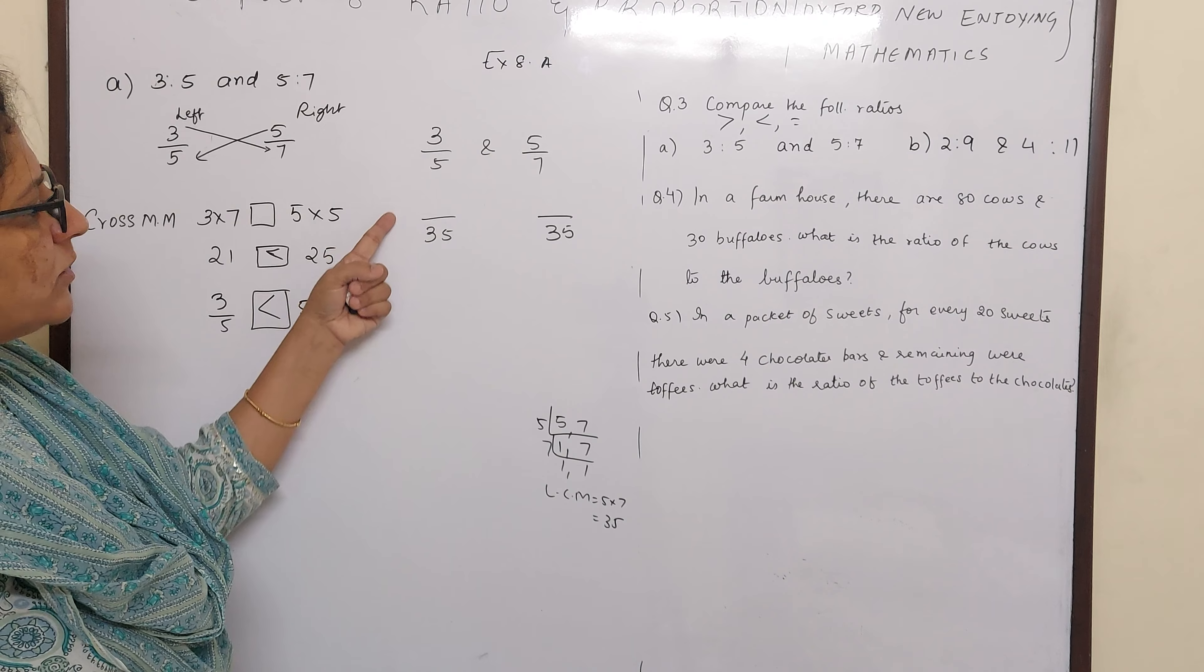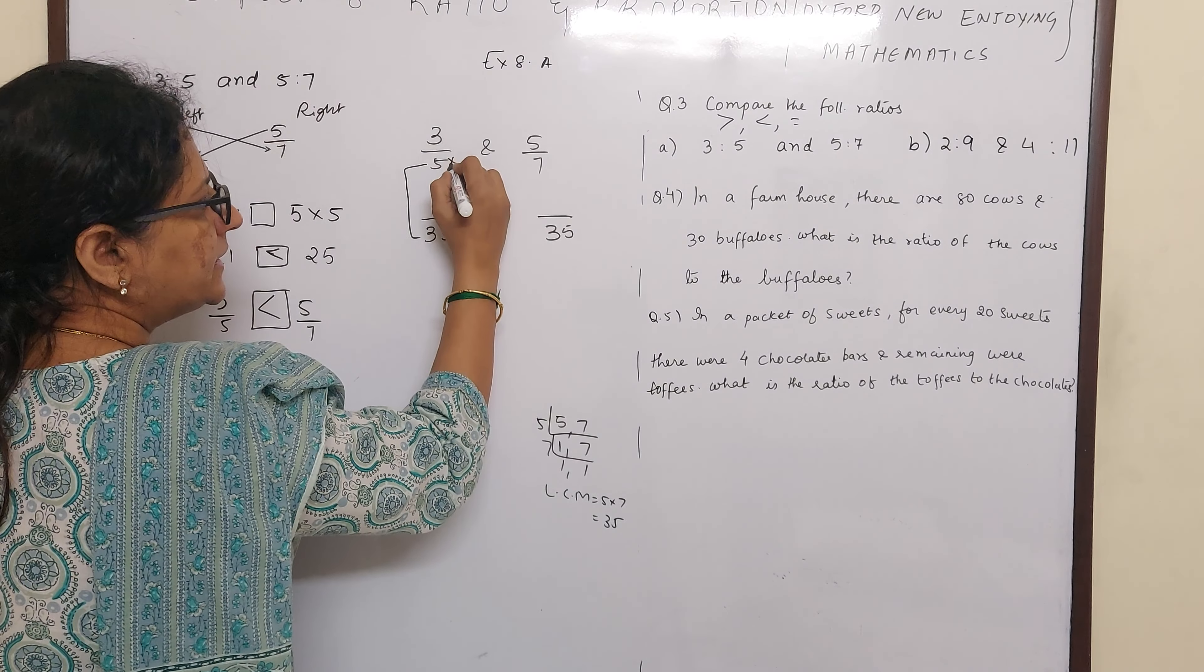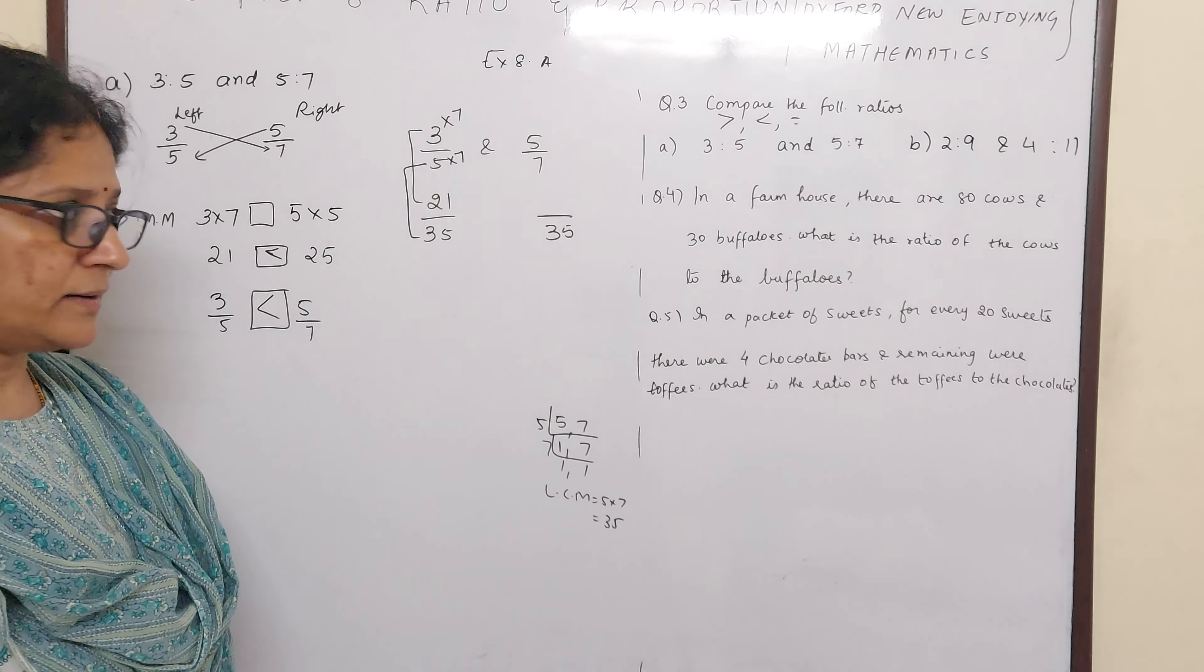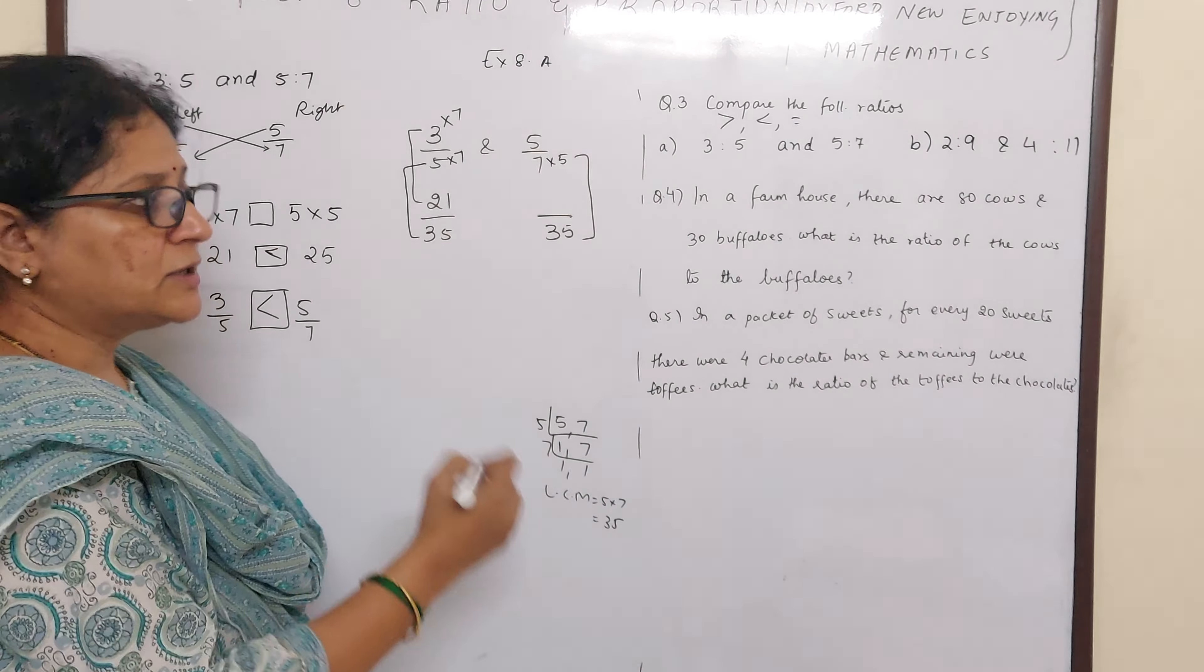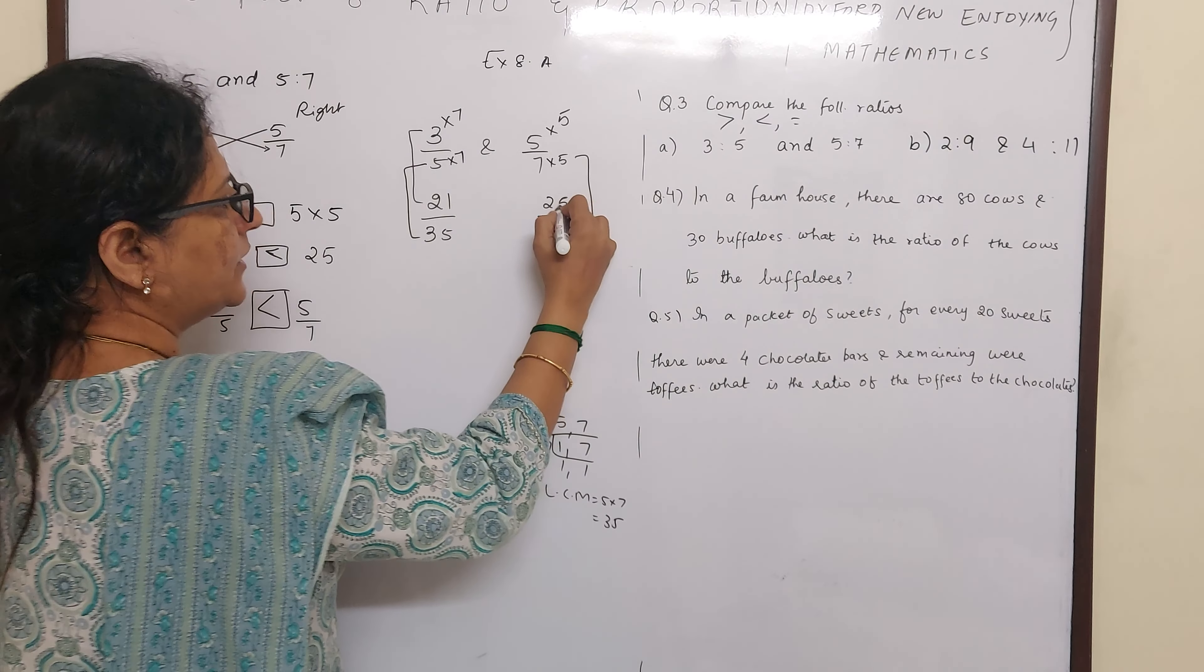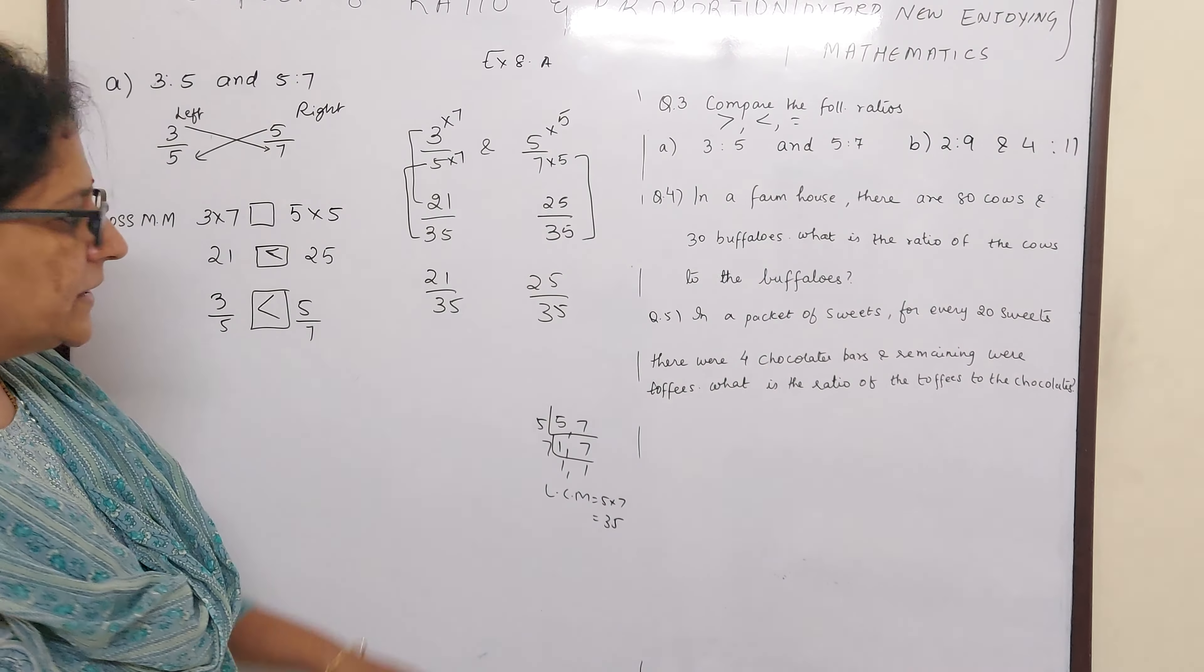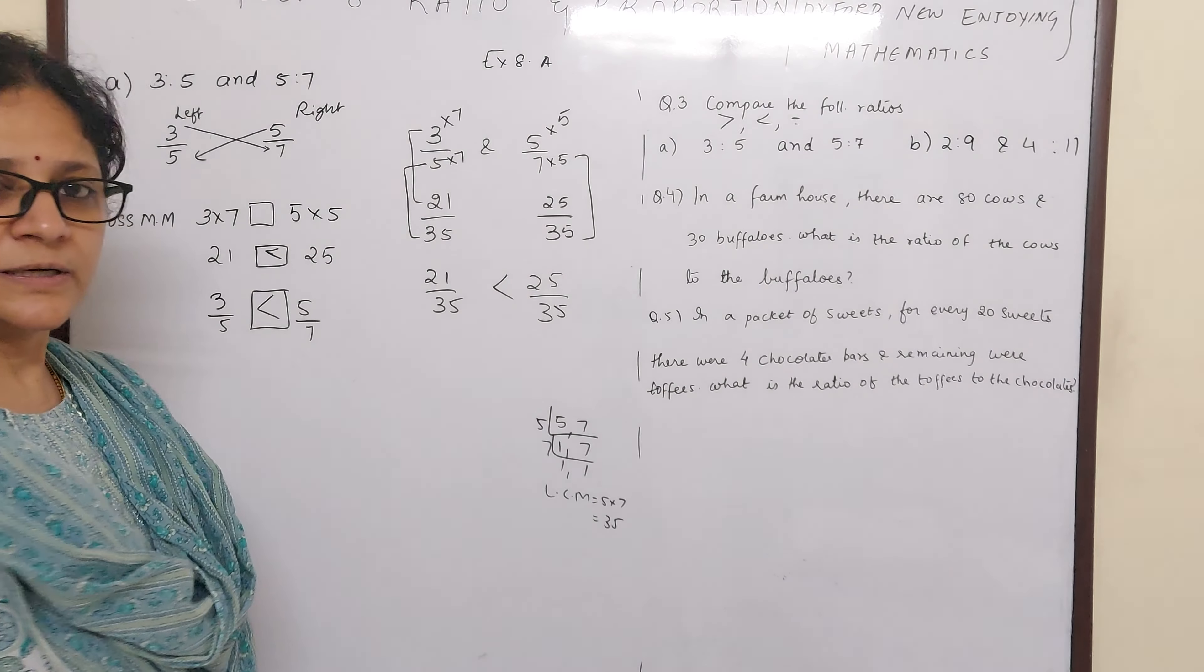So now 5 denominator has become 35. That means this has become 35. How? By multiplying by 7. That means you have to multiply the numerator also with 7. So it will be 3 sevens are 21. Now 7 has become 35. That means 7 fives are 35. So you have to multiply the numerator also with 5. 5 fives are 25. Now if you see they have become like fractions. 21 by 35 and 25 by 35. Now you can easily predict which is greater.